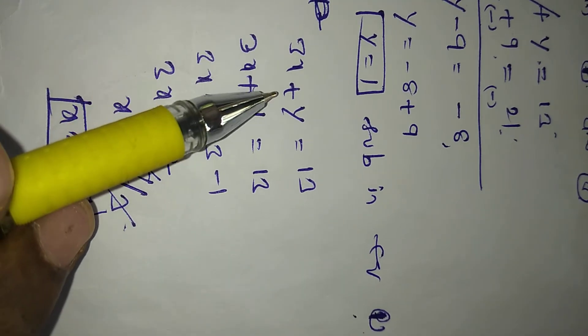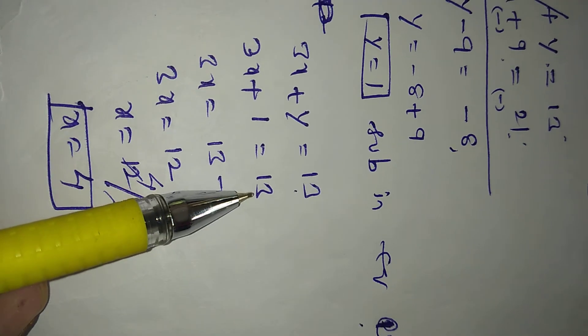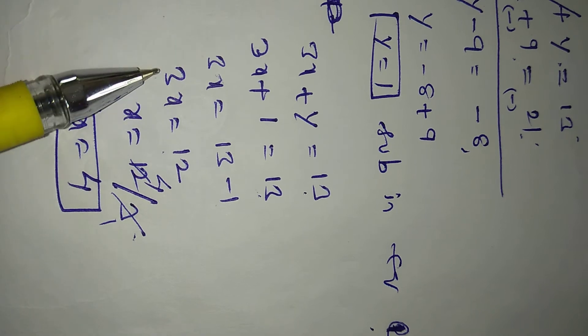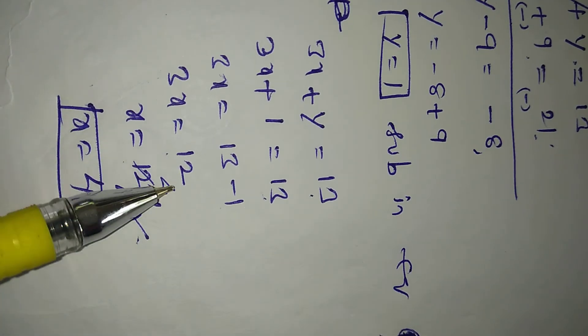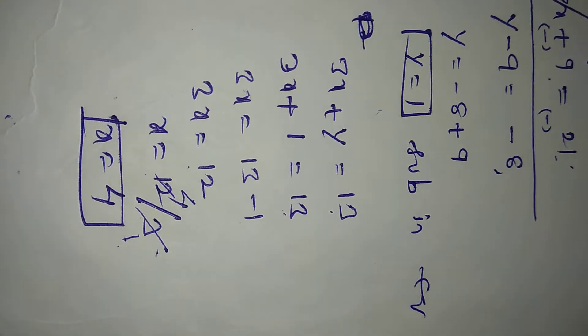We got substitute in equation number 1. The equation number 1 is 3x plus y equals 13. 3x plus 1 equals 13. Plus 1 becomes minus 1. 13 minus 1 equals 12. Into 3 becomes divided by, x equals 12 by 3. 4 times, x equals 4. We got x equals 4 and y equals 1.